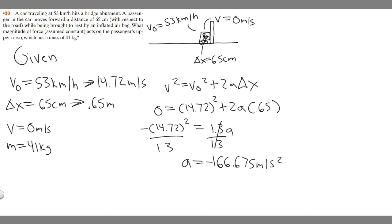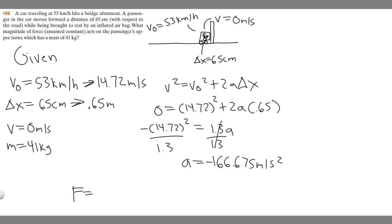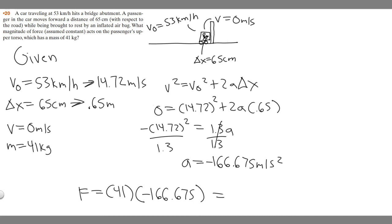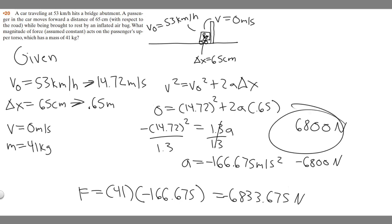Now we want to solve for the force. We have the acceleration in meters per second squared and the mass in kilograms, so force equals mass times acceleration: force equals 41 times negative 166.675, which gives us negative 6,833.675 newtons. They're asking for the magnitude, so it has to be positive — magnitude doesn't include direction. So approximately 6,800 newtons. If you want to write this as kilonewtons, divide by 1,000: that's 6.8 kilonewtons.